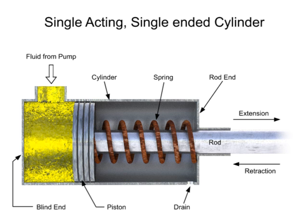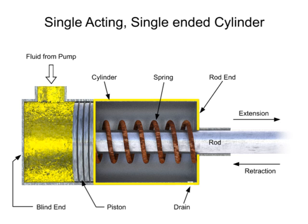A single-acting cylinder is a cylinder in which the working fluid acts on only one side of the piston. The other side of the cylinder utilizes a mechanical load, springs, compressed air, other cylinders, or the momentum of a flywheel to push the piston back in the other direction.